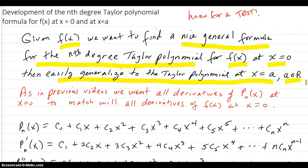As in previous videos, we want all the derivatives of the nth degree Taylor polynomial, denoted P_n(x), at x equals zero to match with all derivatives of f(x) at x equals zero. We're starting with x equals zero first.